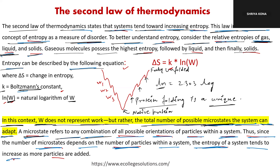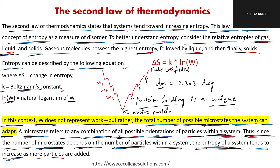A microstate refers to any configuration of all particles within the system. Since the number of microstates depends on the number of particles, the entropy of a system tends to increase as more particles are added. Adding particles creates more microstates, which means more entropy.